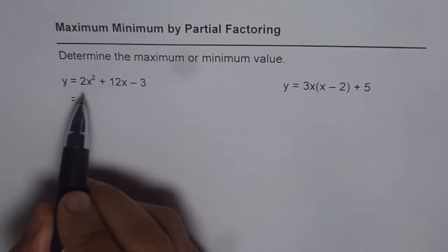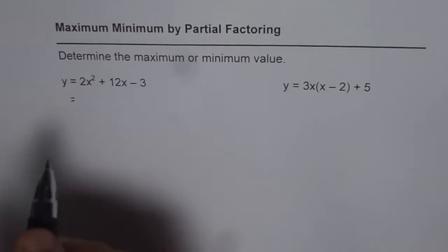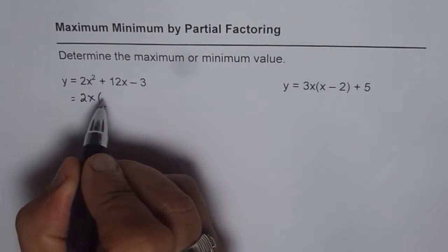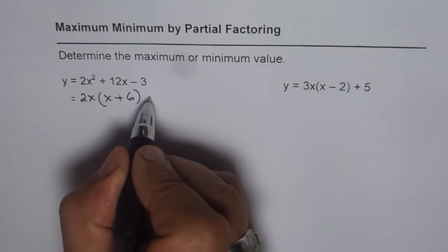Now we can partially factor the first two terms and that is how it gets its name. 2x squared plus 12x has 2x in common, so what we get here is 2x times x plus 6 minus 3.